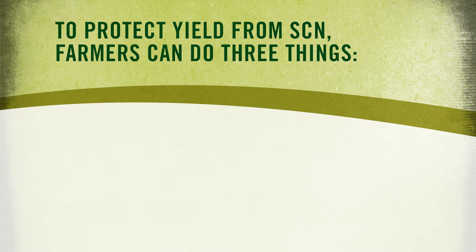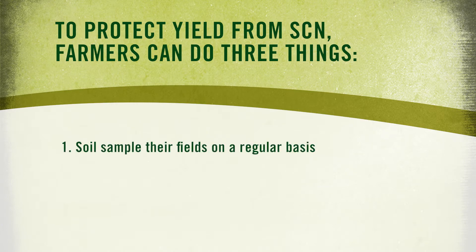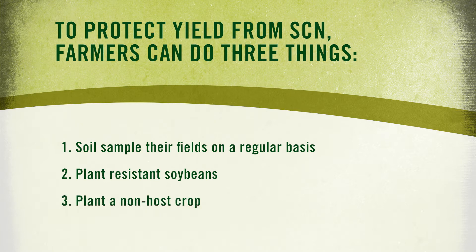To protect yield from SCN, farmers can do three things right now. One, soil sample their fields to determine if they have SCN, and do that on a regular basis if they do. Secondly, they can plant resistant soybeans, and if at all possible, rotate the type of resistance. Thirdly, they can plant a non-host crop, such as corn, wheat, or rice.